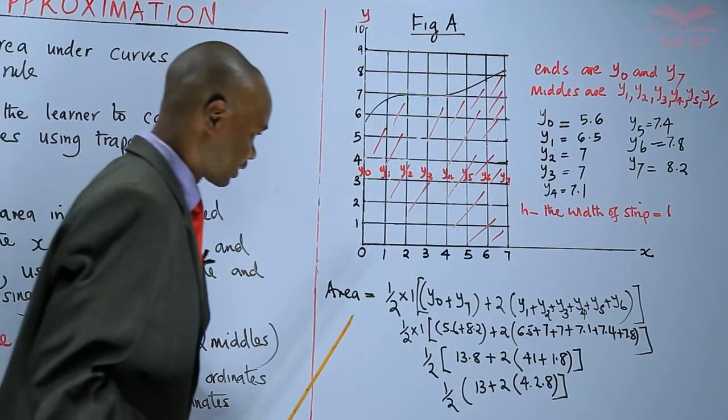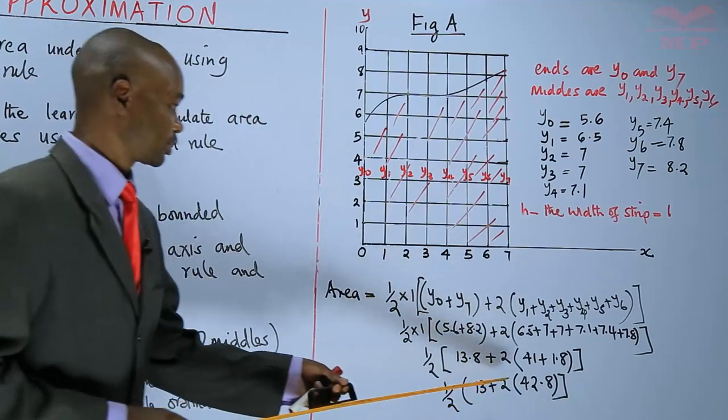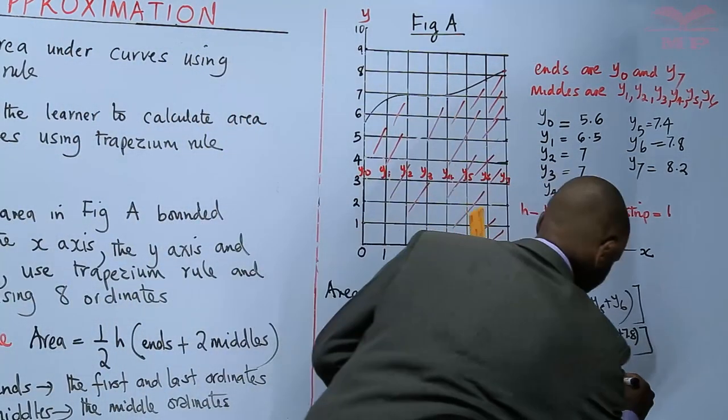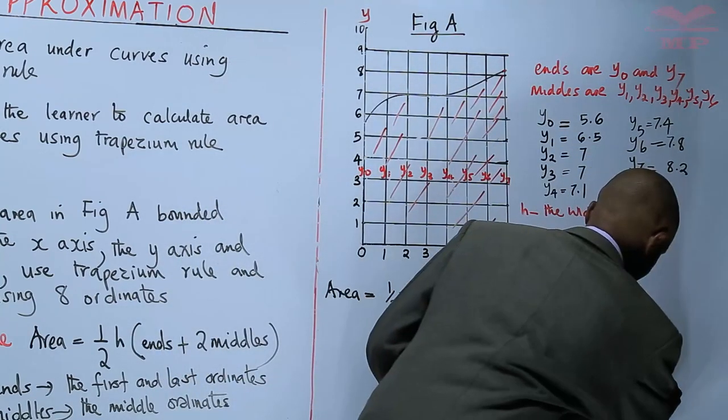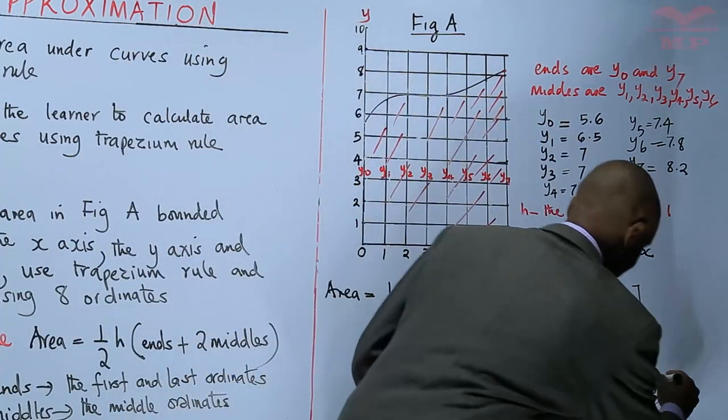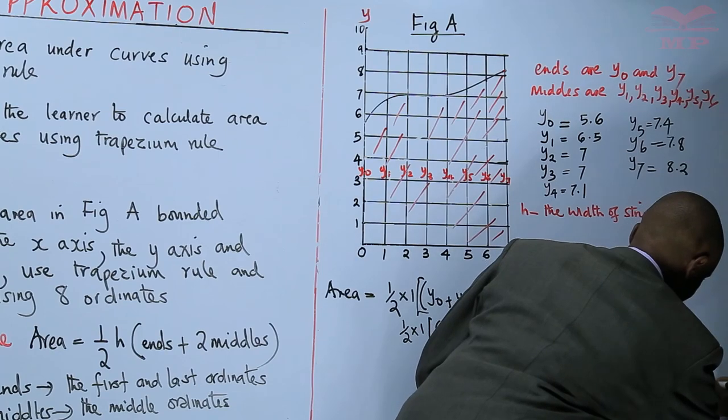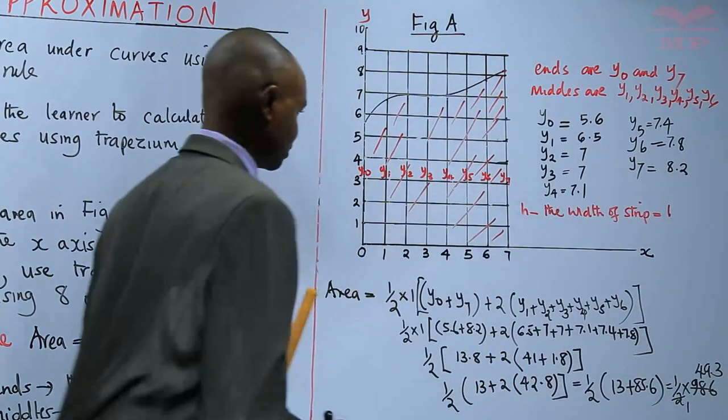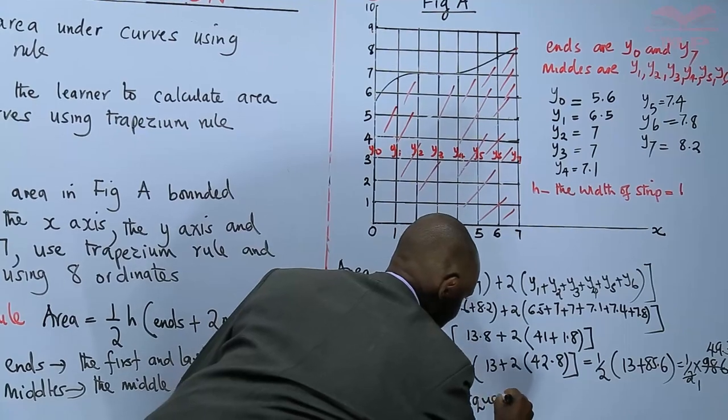Simplify. 42.8 times 2 gives a half into 13.8. Double 42.8 times 2, you'll get 85.6. 85 plus 13 is 98. So it's a half times 98.6, which works to 49.3. So the area is equal to 49.3 square units.